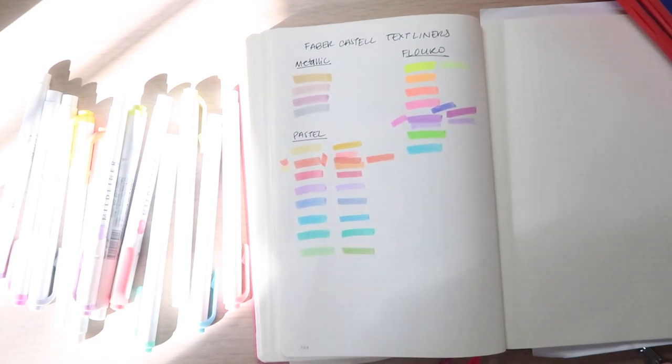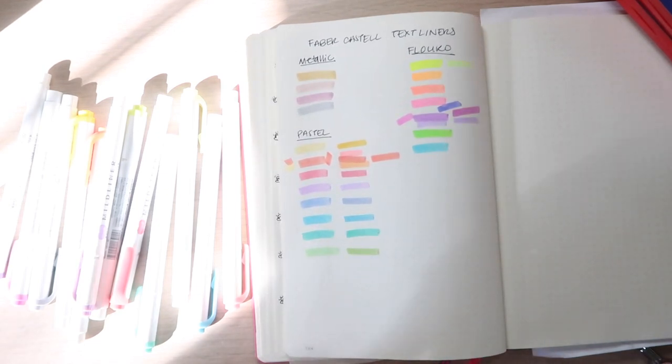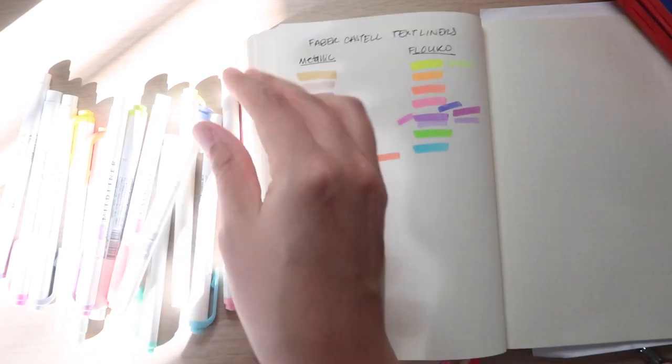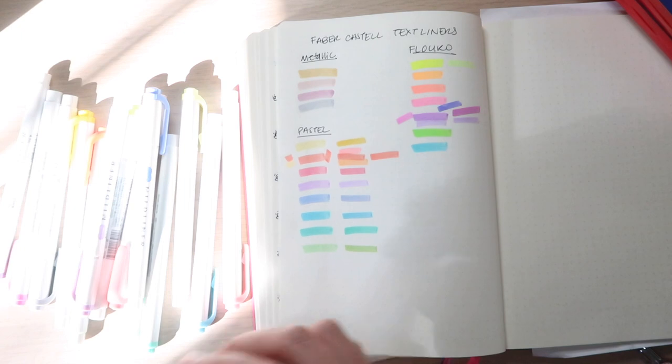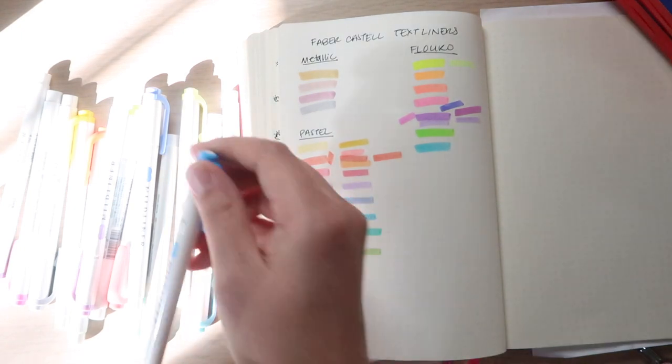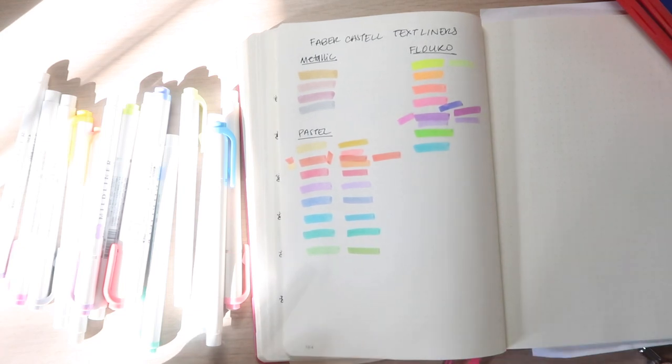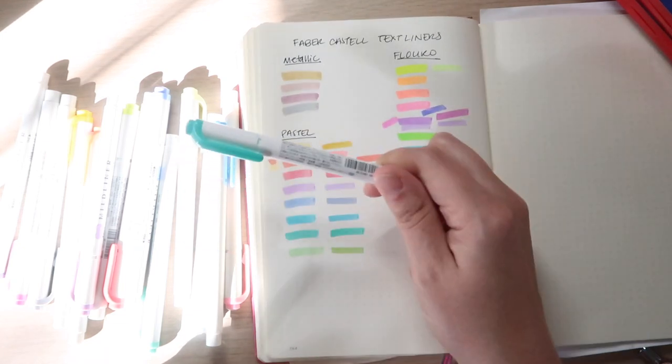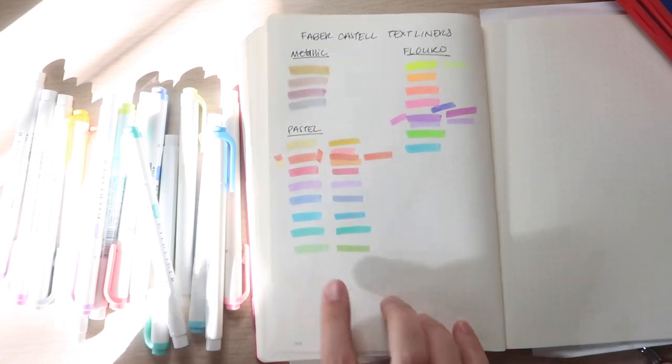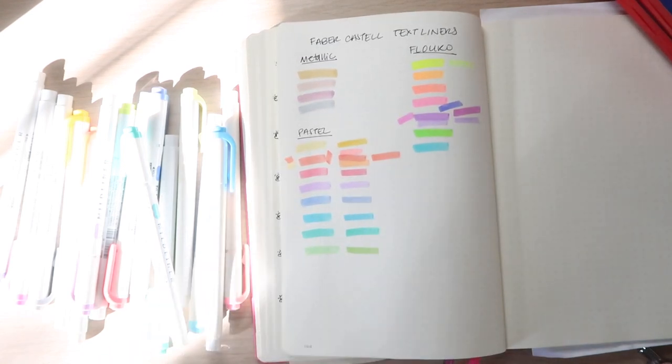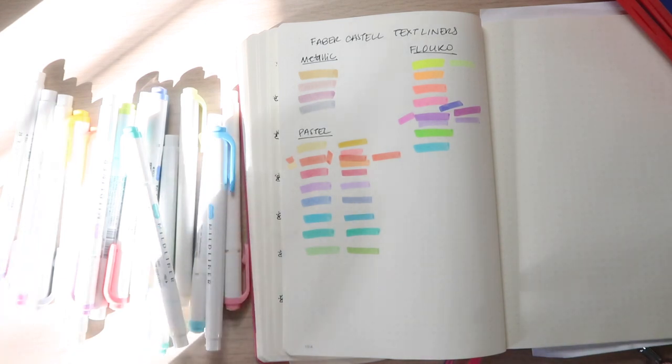For the blue, it was almost a spot on match for that darker blue. And I used, what was this one? Dark blue. And then for the brighter blue, again, a really great match. And this one was cyan. And then again, another great match for the green is, what is this one? Summer Green. And then the green here, not exactly the same, but similar, is just the Mildliner Green.